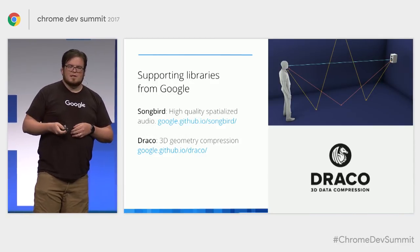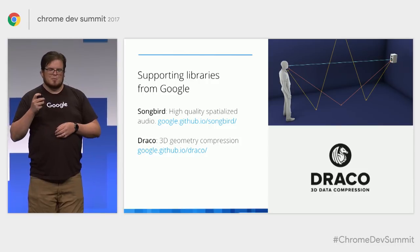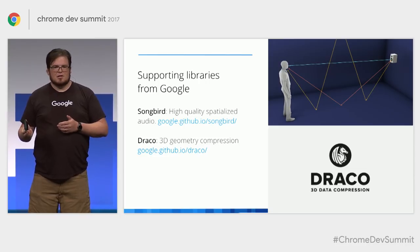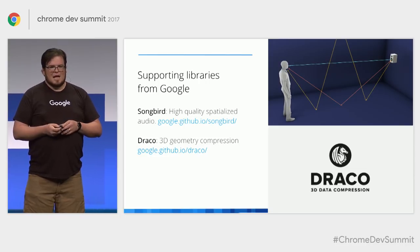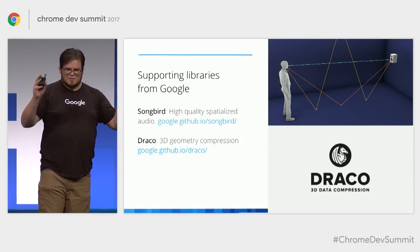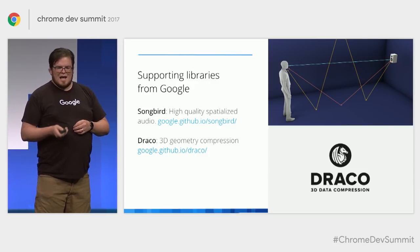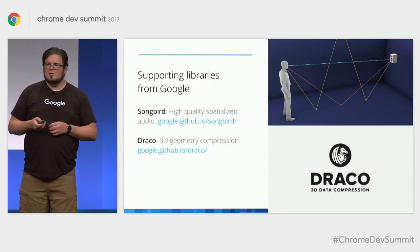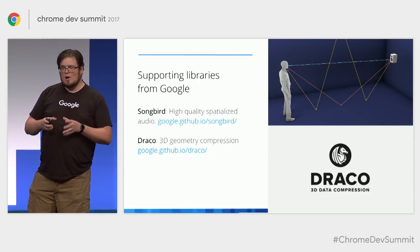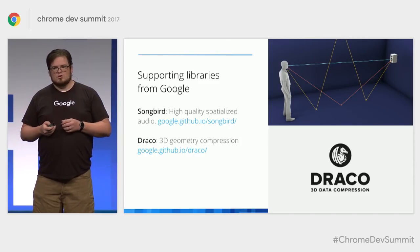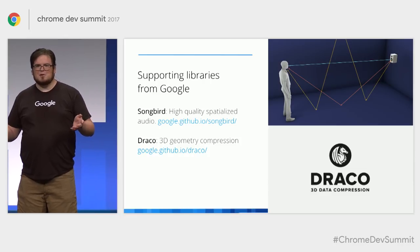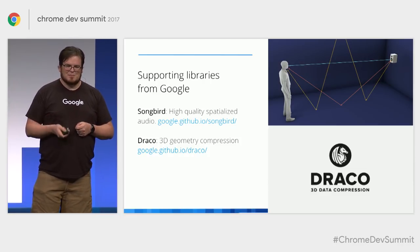A couple of other support libraries from Google worth highlighting: Songbird, which is a high-quality spatialized audio library that boils down your spatialized audio into an ambisonic audio stream taking into account room modeling and other cool audio techniques. And Draco, which is a 3D geometry compression library that does a spectacular job of shrinking the amount of data you need to send to the user's system — I've heard numbers like 20x smaller meshes — so it's definitely worth checking out.